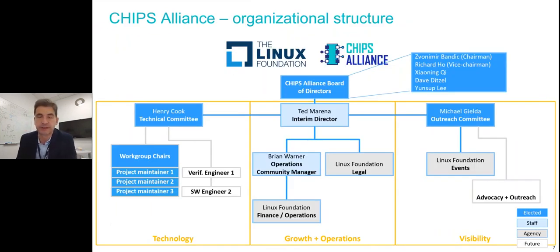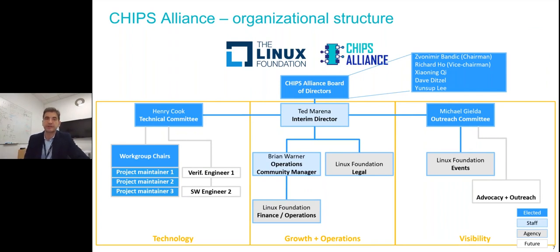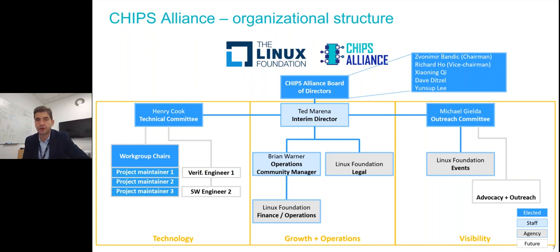CHIPS Alliance follows an organizational structure very similar to the RISC-V Foundation — a lot of things, including the participation agreement, were copied from RISC-V Foundation. We are a project incorporated into the Linux Foundation. The CHIPS Alliance board of directors oversees all activities and currently includes myself as chairman, Richard Ho from Google as vice chairman, Janine Kee from Alibaba, Dave Ditzel from Esperanto, and Yousup Lee, CTO of SiFive. The chair of the technical committee is Henry Cook, and under Henry there are multiple workgroups.